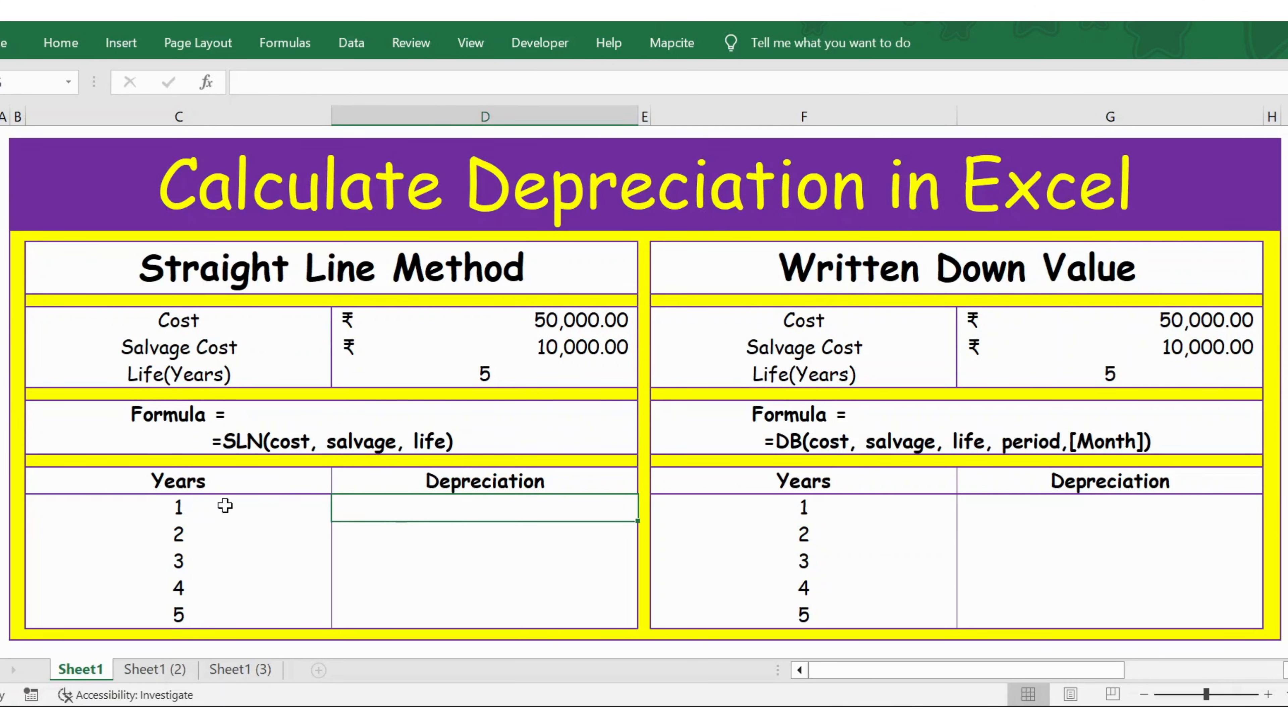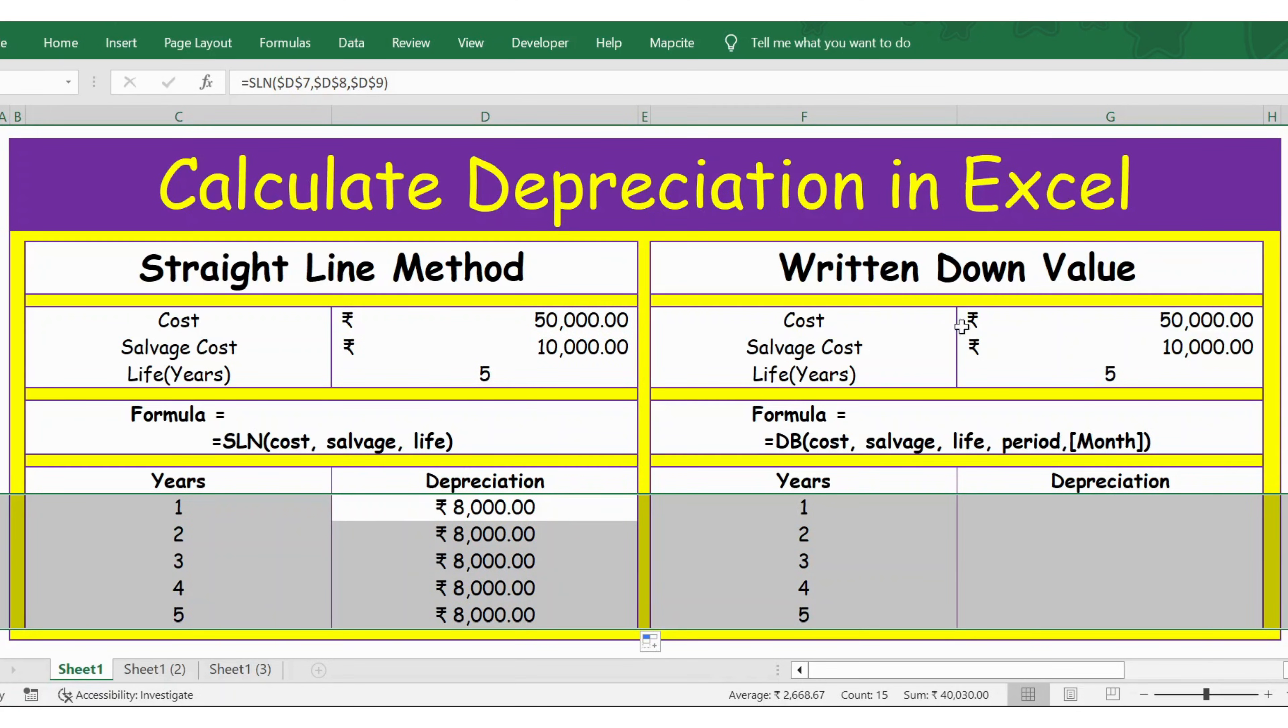Equals SLN, and then cost is 50,000. I press F4 to lock the cell, comma, then salvage cost 10,000. Again F4 to lock the cell, comma, and then you have the life of five years. Select this, lock this, close bracket, press enter. Now let's extend the formula. Here is the result for each year, the depreciation amount.